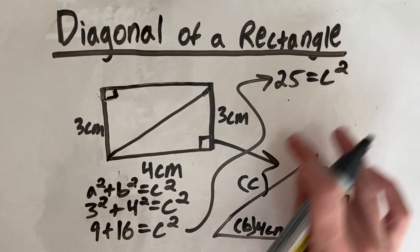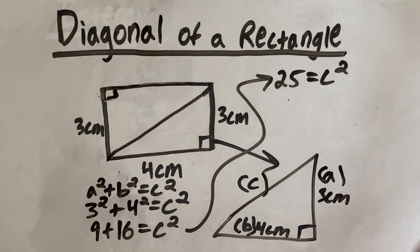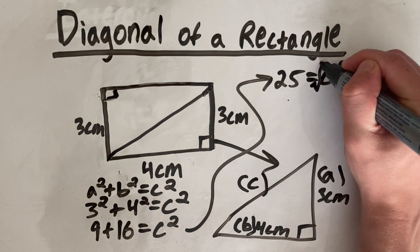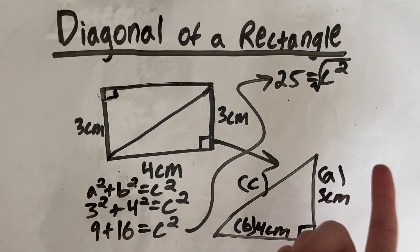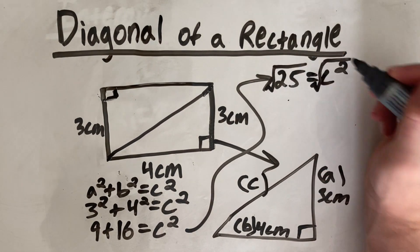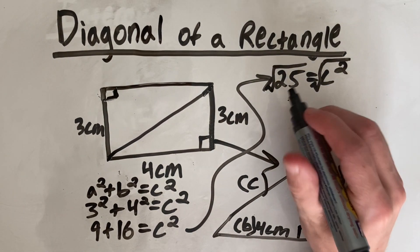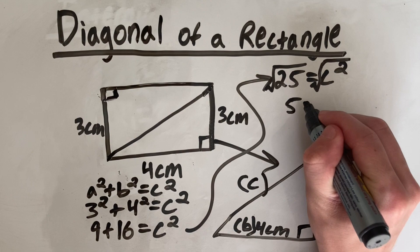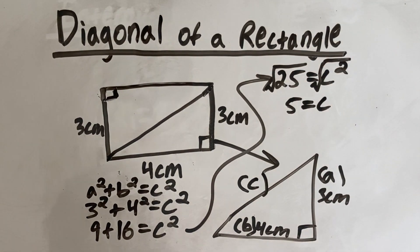Now be careful because we want C, not C squared. So to get C by itself, we take the square root. And what you do to one side, you always have to do to the other. Therefore, square root of 25 will be 5, which is equal to C.